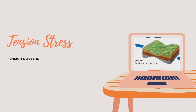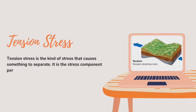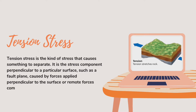The second type is tension stress. Tension stress is the kind of stress that causes something to separate. It is the stress component perpendicular to a particular surface, such as a fault plane, caused by forces applied perpendicular to the surface or remote forces communicated through the surrounding rock.